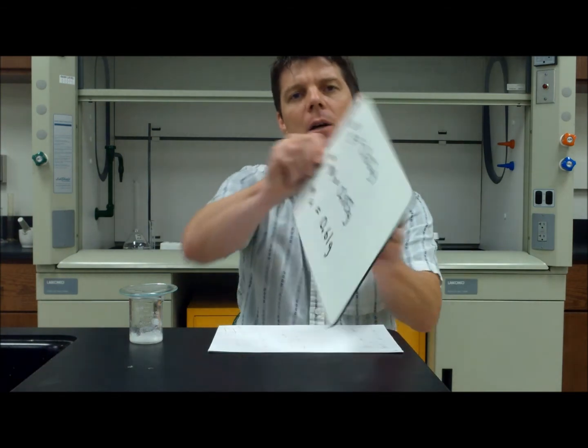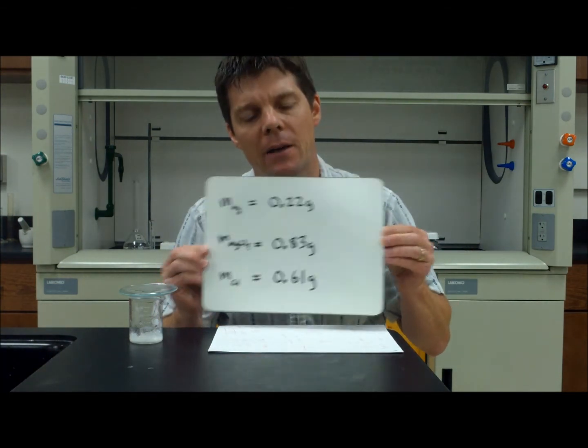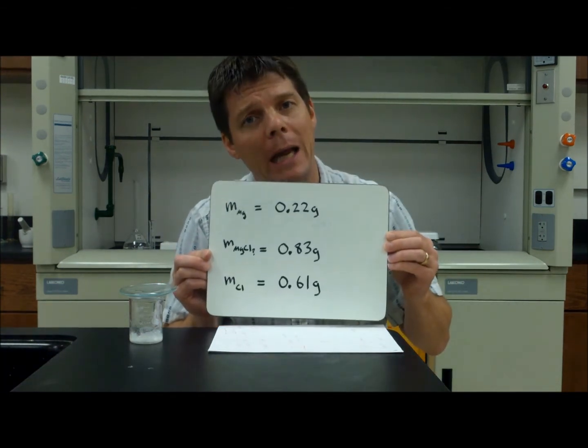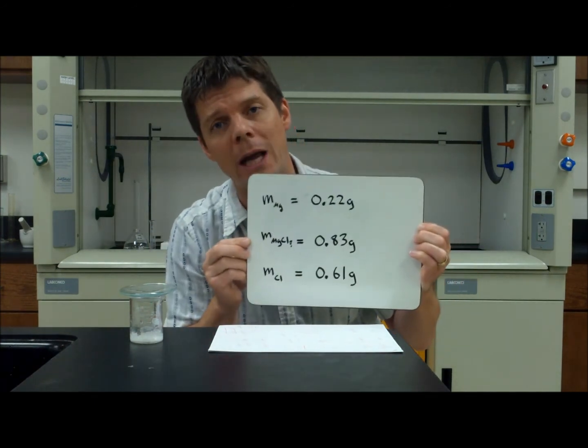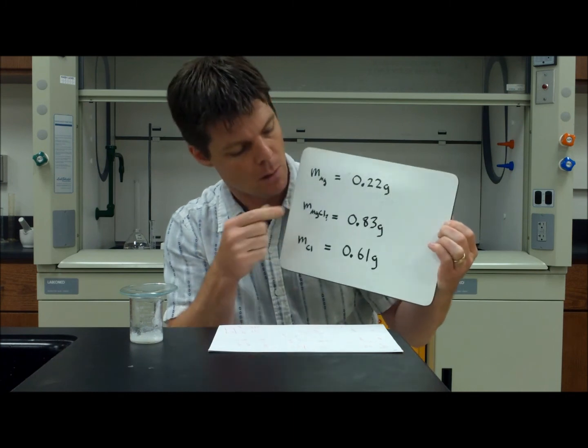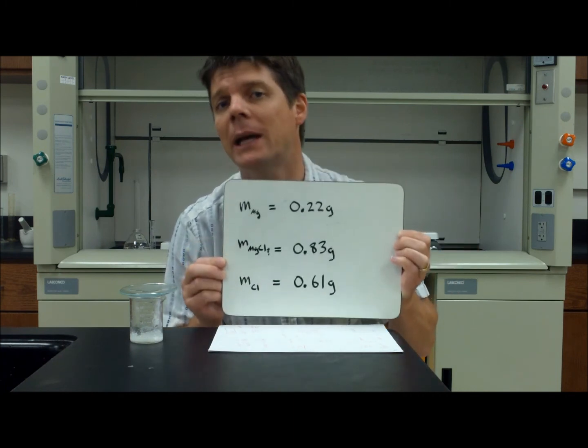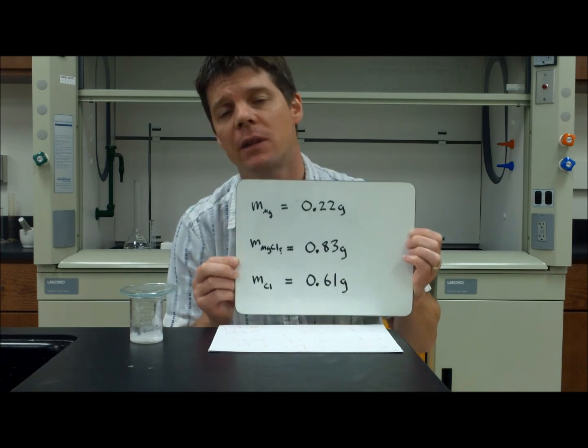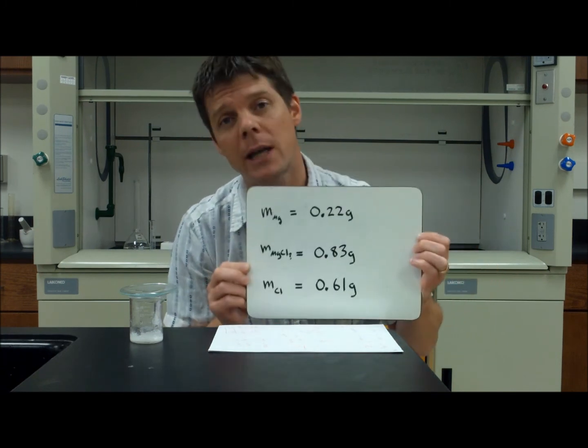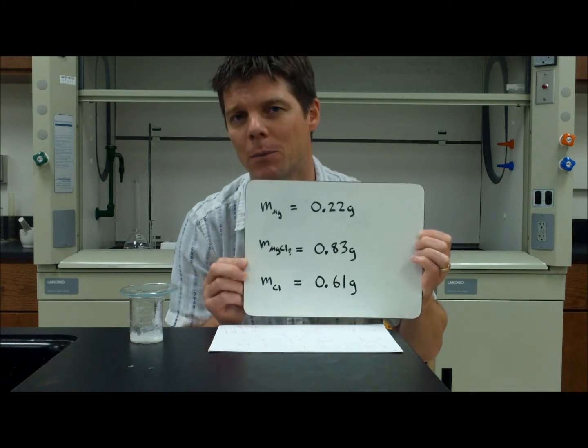And what I found was that there was a mass of 0.83 grams. Now by subtraction, I know that there were 0.22 grams of magnesium, 0.83 grams of magnesium chloride. So by subtraction, I can find the mass of the additional chlorine, which worked out to be 0.61 grams.